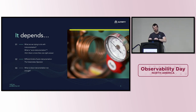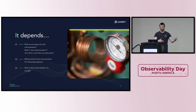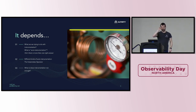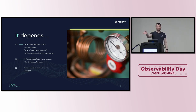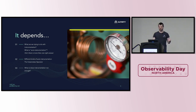Just a quick agenda: we're going to talk about what our goals are with auto-instrumentation and why we'd even want to use it. Then we'll talk about what different kinds of auto-instrumentation are available, whether you're in Kubernetes or not, depending on which runtimes and languages you're using. We'll touch on the Kubernetes operator briefly, and finally talk about when auto-instrumentation is not enough and what we need to manually annotate.